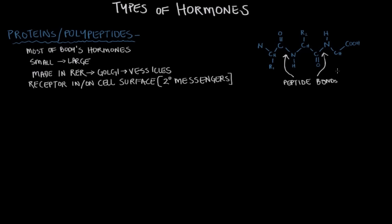One example is insulin. Insulin is a relatively large hormone, so it's a protein hormone. So we've got proteins and polypeptides as the first major type.